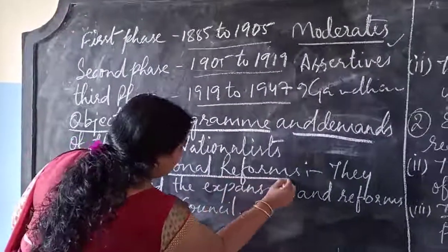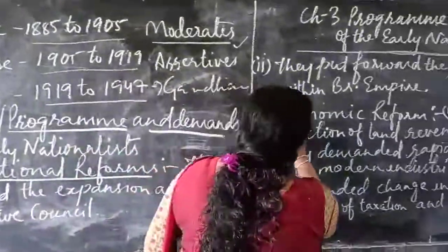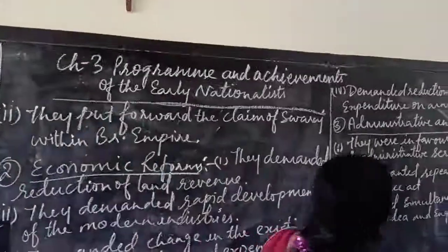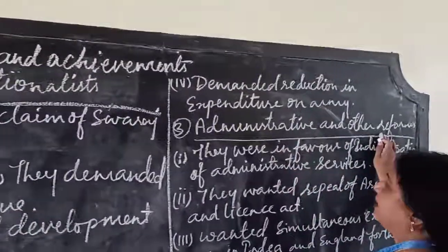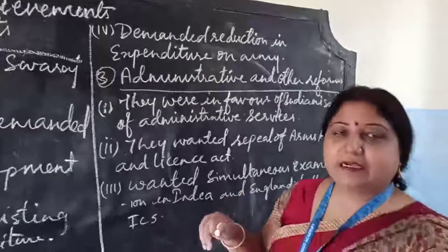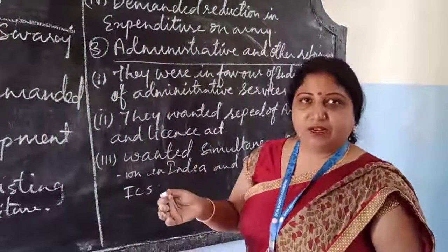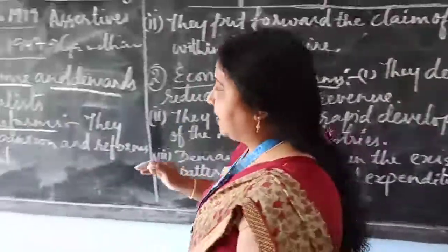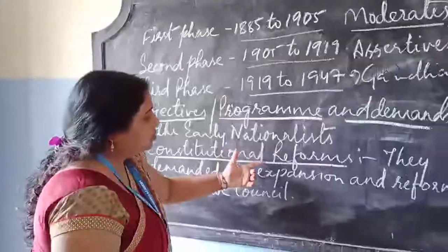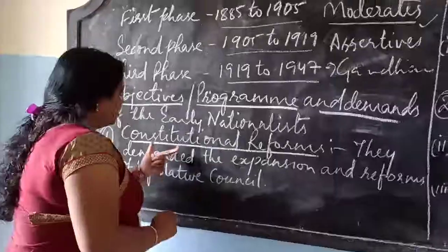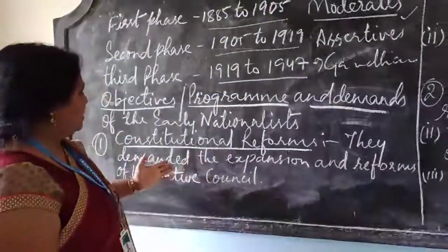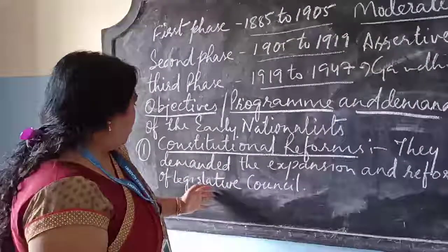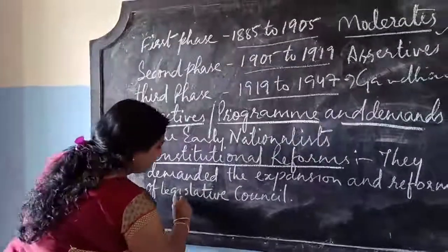The programs and demands include constitutional reforms, economic reforms, administrative and other reforms, and defense of civil rights. Under constitutional reforms, the first point is that they demanded the expansion and reform of the legislative council.